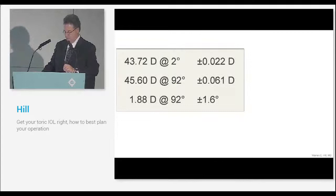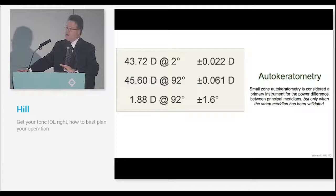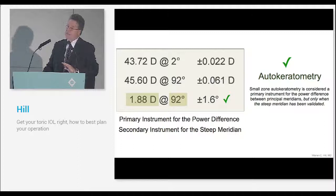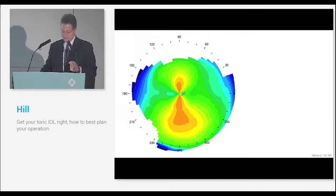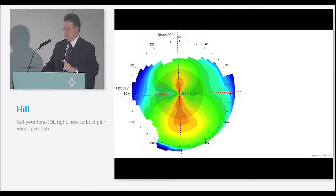An axial power map of a topographer is your primary instrument for the steep meridian. For the power difference between meridians, we use autokeratometry, but all autokeratometers are not created equal. What we need to do is make sure that the steep meridian on the autokeratometry lines up with what we got for the toric IOL. That validates the steep meridian, and it validates the keratometry. Now we have a method to know what our steep meridian is, and we also have a method to know is the keratometry being measured in the correct way.